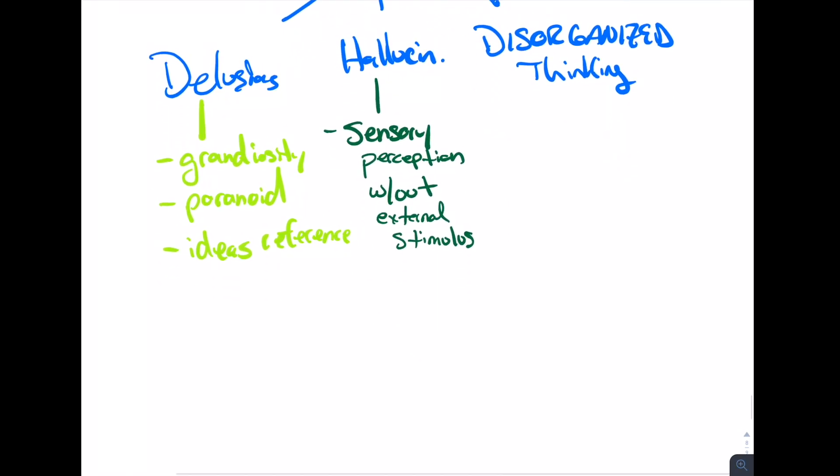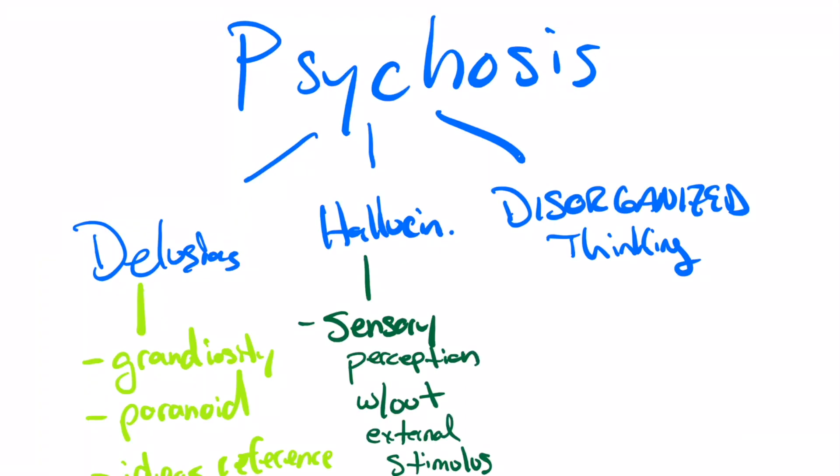Usually this would be either auditory or visual, even though the auditory is probably more common for a patient with schizophrenia, for example. Or you can have a disorganized way of thinking.